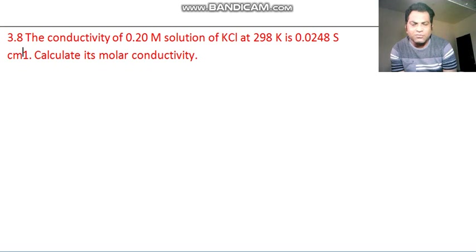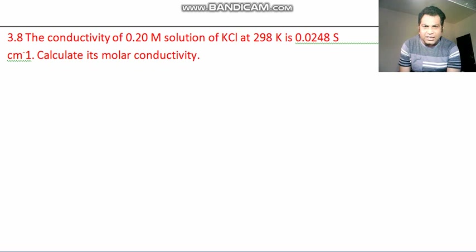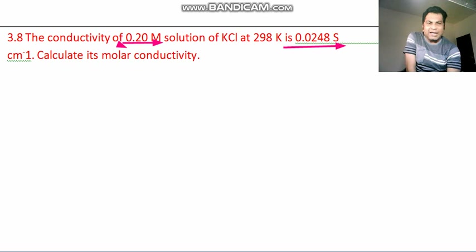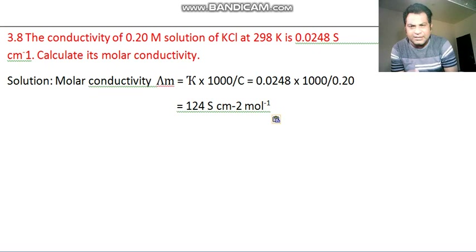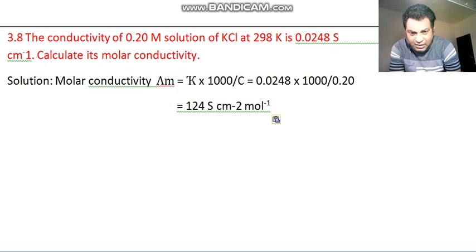We have to calculate molar conductivity. We are provided with concentration and conductivity. Very simple formula: molar conductivity equals conductivity divided by concentration. Put this formula and get the answer. Molar conductivity lambda equals kappa divided by concentration, and to convert units, 1000 is multiplied. The final answer is 124 S cm² mol⁻¹.